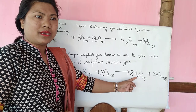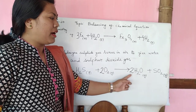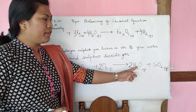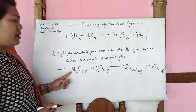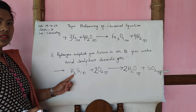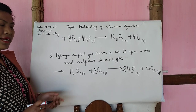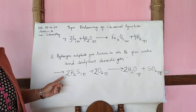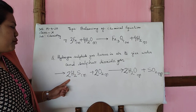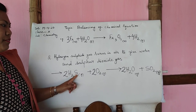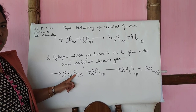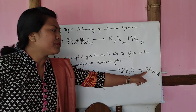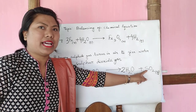After balancing oxygen, come to hydrogen. On the product side you will find four hydrogen atoms — two times two equals four. Then on the reactant side you have two, so make it four by placing a coefficient of 2 there.